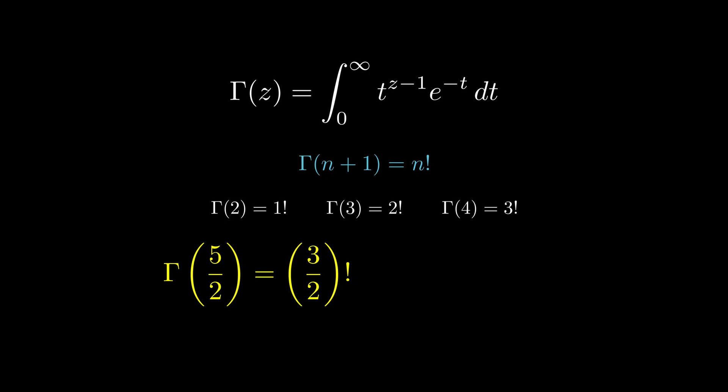When you do the calculation, 3 halves factorial turns out to be 3 times the square root of pi divided by 4, which is approximately 1.329. Pretty wild that pi shows up in there, right? But that's a topic maybe for another time.